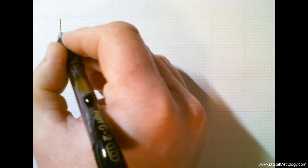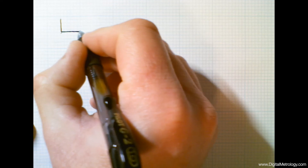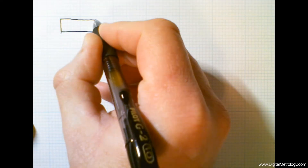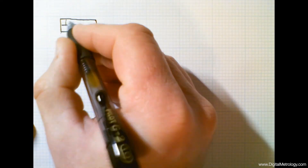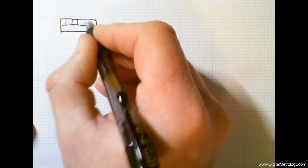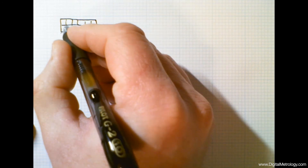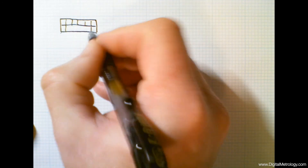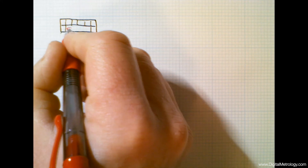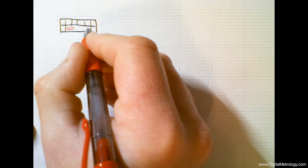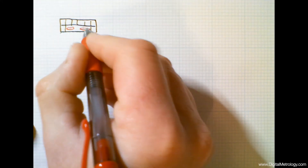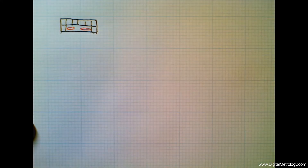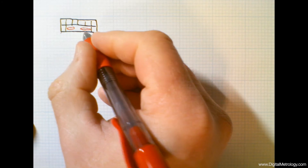Have you ever noticed how your keyboard develops shiny spots on the keys you use the most often? Mine does, and often I find that I'm spending a lot of time on my spacebar. My spacebar has a couple of shiny spots where each thumb seems to attack it.